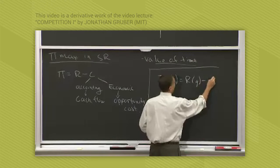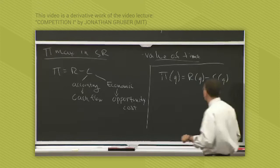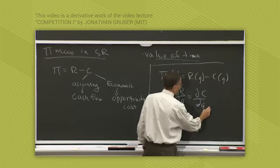What little q a firm chooses is dictated by maximizing this equation. So a firm will choose little q such that dR/dq equals dC/dq. That's the profit maximizing equation. A firm will choose its quantity such that dR/dq equals dC/dq.